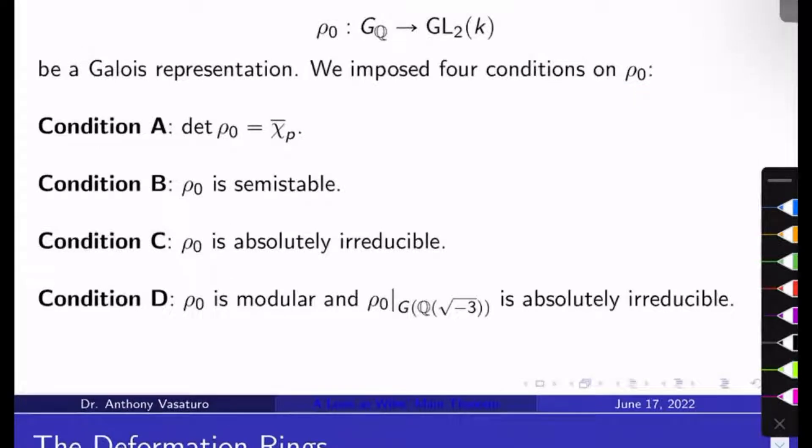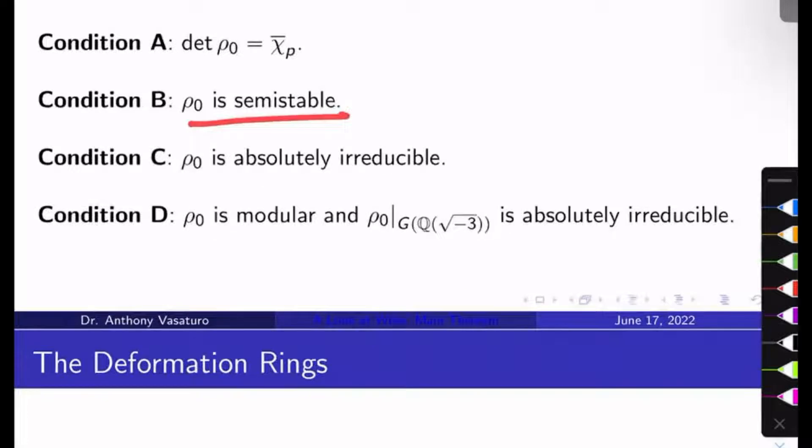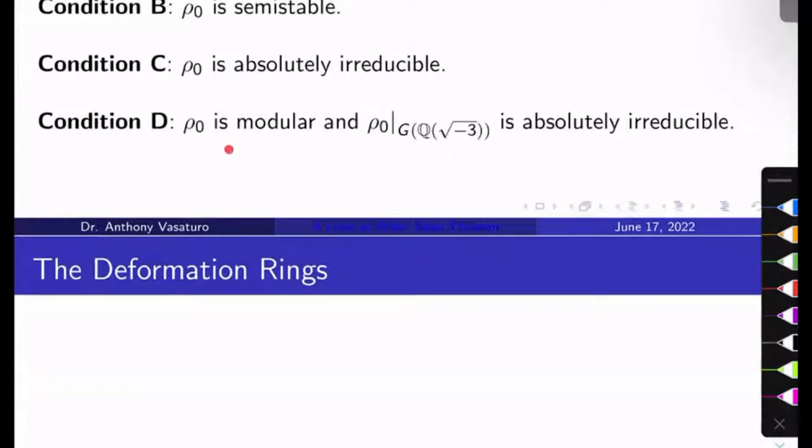First, we wanted it to have mod P cyclotomic determinant. Second, we wanted it to be semi-stable. Third, we wanted it to be absolutely irreducible. Fourth, we wanted it to be modular, and we want it to be the case that when you restrict rho-naught to the Galois group of Q adjoin root negative 3, we get an absolutely irreducible representation.